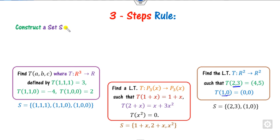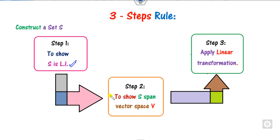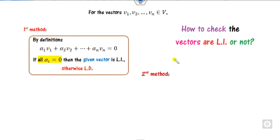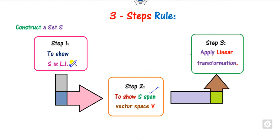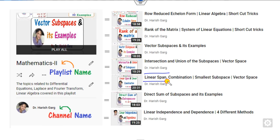Once you define the set S, you apply the three-step rule: first, prove that the set S is linearly independent (LI); second, show that S is a span; and finally, apply the linear transformation. There are two methods to check whether vectors are LI. First, multiply with scalars alpha_i — if all alpha_i are zero, it is LI; if at least one is non-zero, it is linearly dependent (LD). The second method is to construct matrix A from vectors V1, V2, V3 and check the determinant: if zero, it is LD; otherwise LI. You can review these methods in the Dr. Harikar playlist, Mathematics 2.